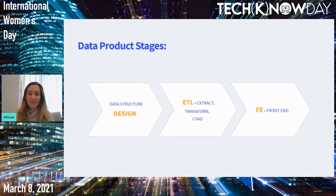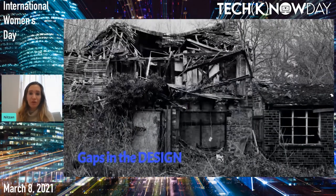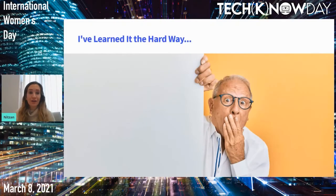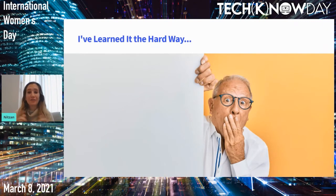The problem is that if there are gaps in the design, everything will be incorrect, and eventually the front-end will not give the users the insights that they need to see. Unfortunately, as I mentioned in the beginning, I've learned it the hard way, where I created a design that was missing a fundamental dimension and I needed to start everything from the beginning — the design, the ETL, and the front-end.